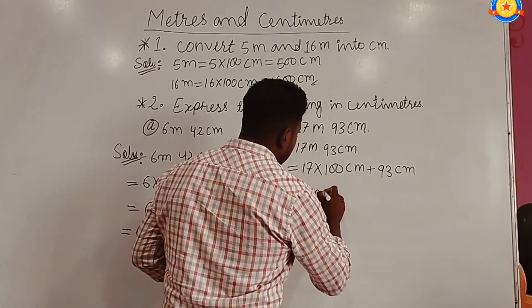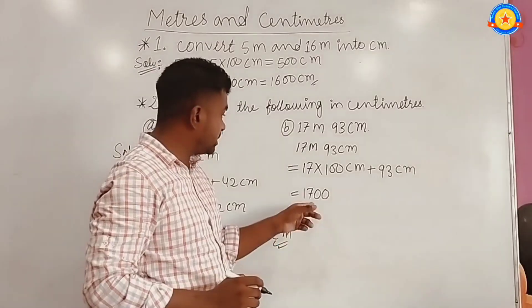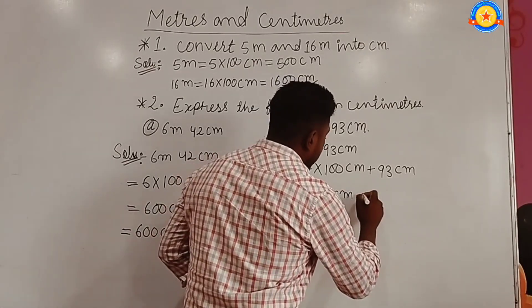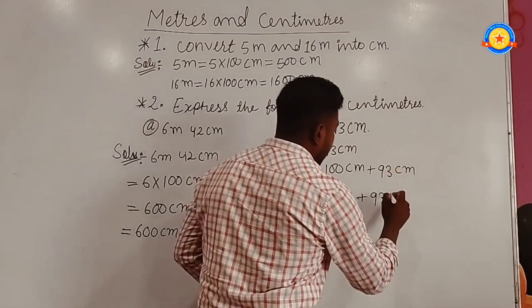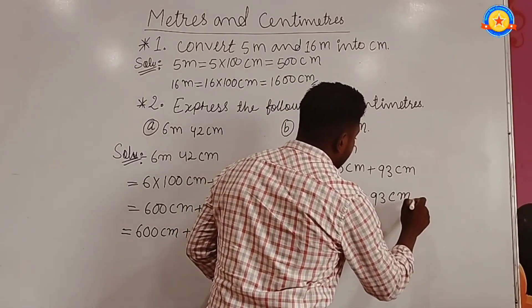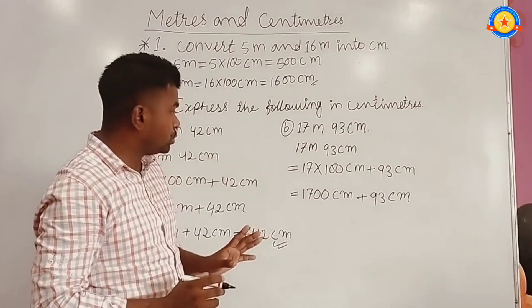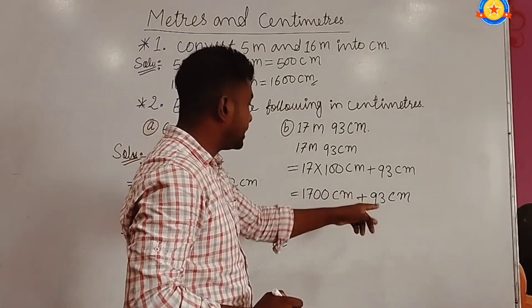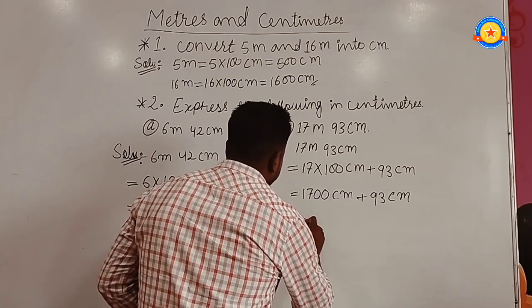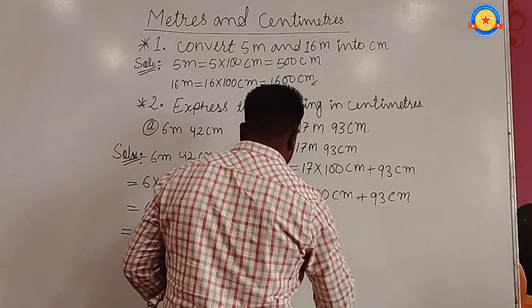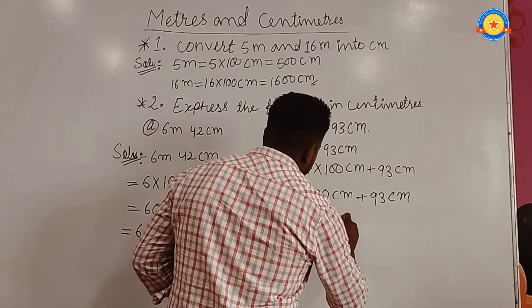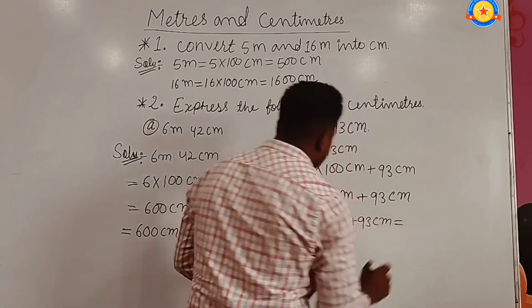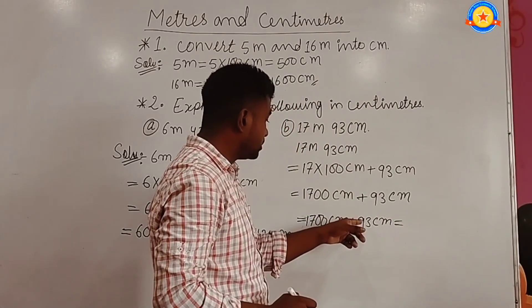17 into 100 centimeters equals 1700 centimeters, and we have plus 93 centimeters. So 1700 cm plus 93 cm equals 1793.